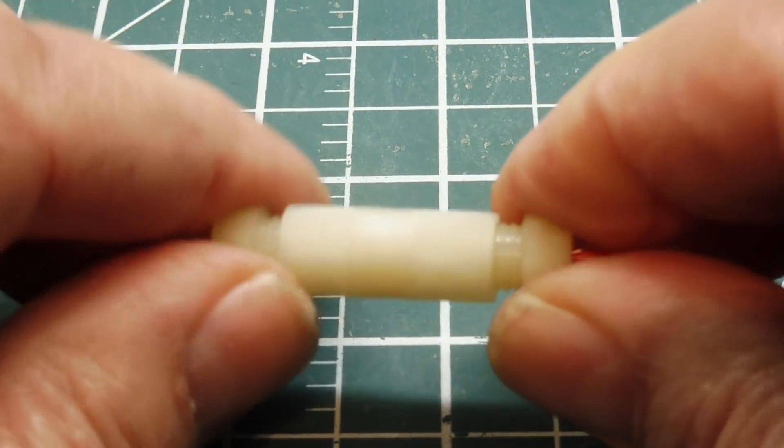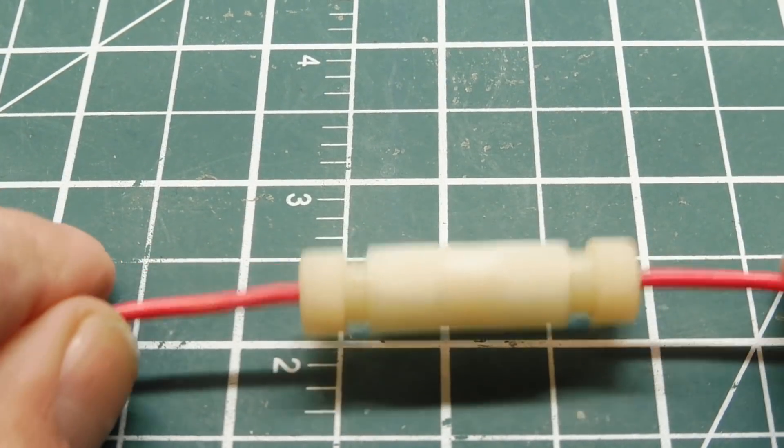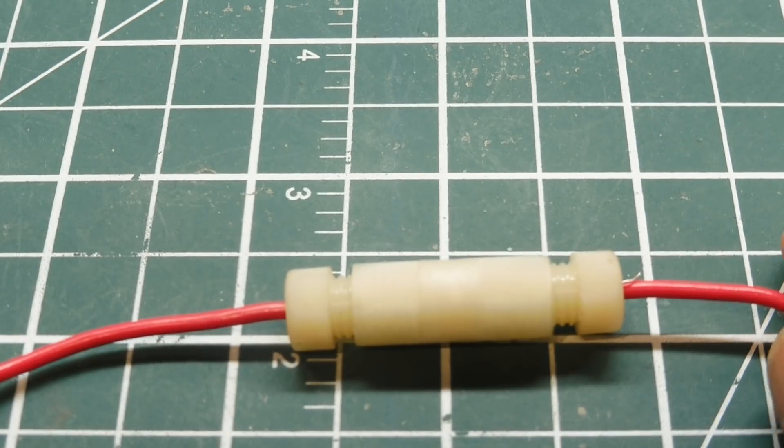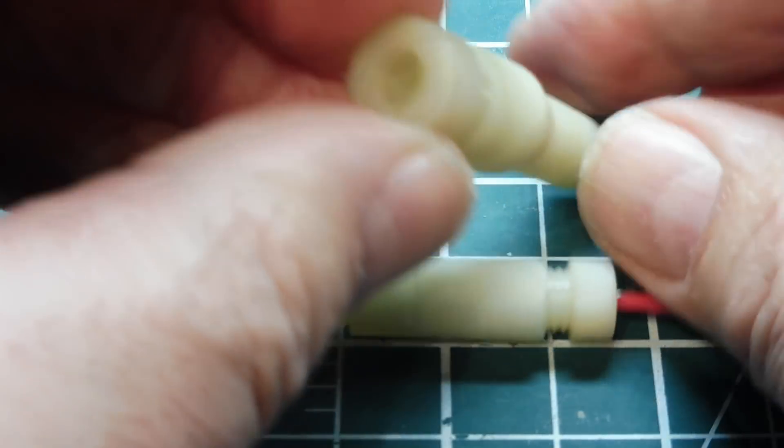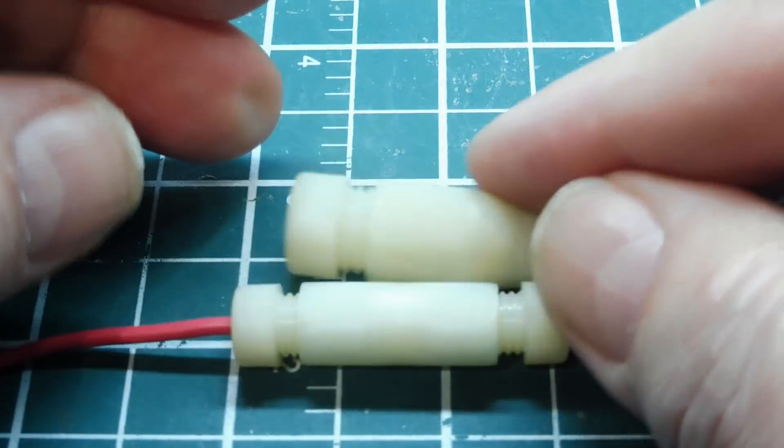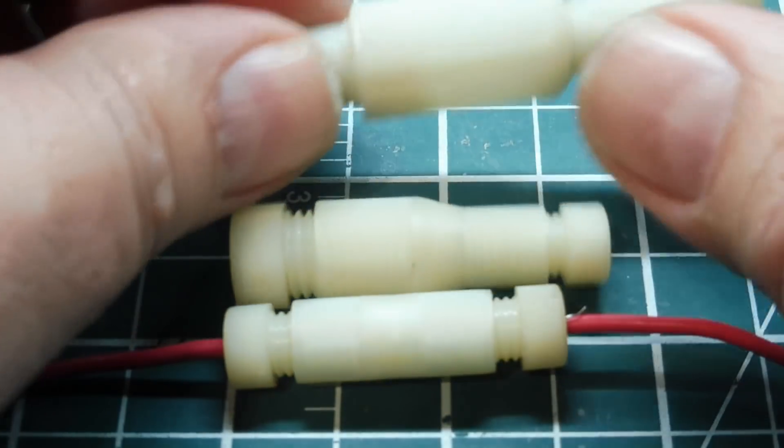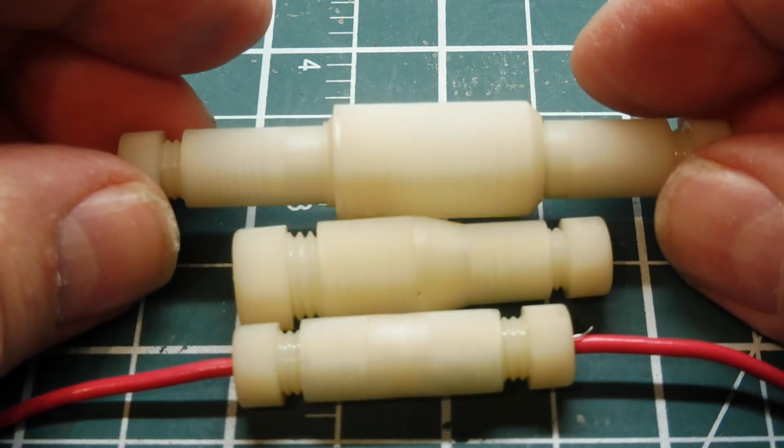These are called PosiLock, because once they're locked, they won't vibrate apart. We can get these in a couple of varieties. This is a large gauge to a small gauge. And we have one, it's a fuse holder.